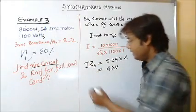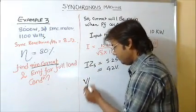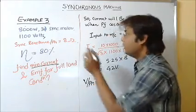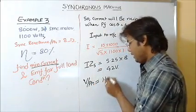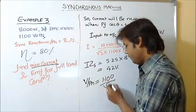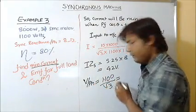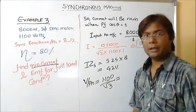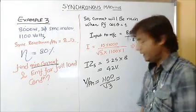This is the line voltage, so I can find the phase voltage. V per phase is equal to 1100 divided by √3, which gives 635.8 volts.